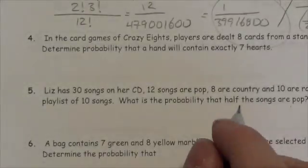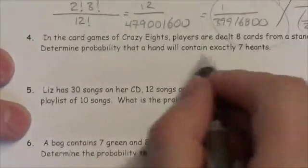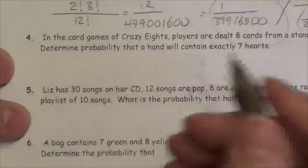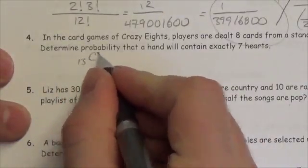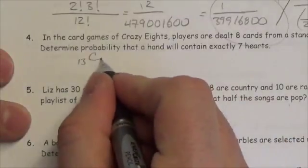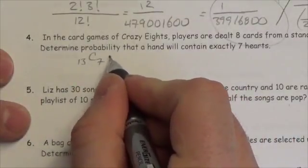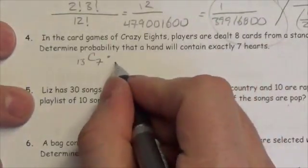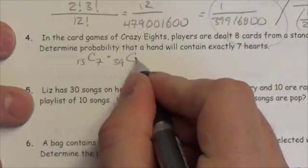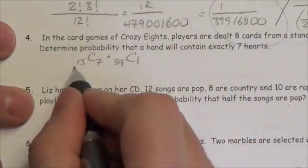In a card game of Crazy 8s, players are dealt 8 cards from a standard deck of cards. Determine the probability that that card will contain exactly 7 hearts. Let's just think about what's going on here. We want to have exactly 7 hearts in there. Well, how many hearts are there in a standard deck? There were 13, and so to get exactly 7 hearts, we would do 13 choose 7. And we need another card here because we need 8 cards. Well, there are 39 other cards to choose from, and we only need to choose 1 out of all of those.